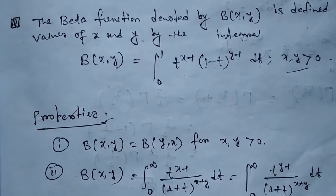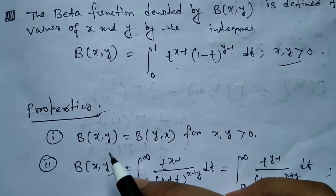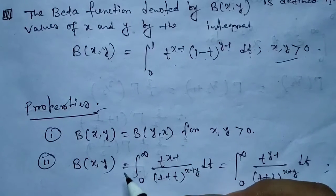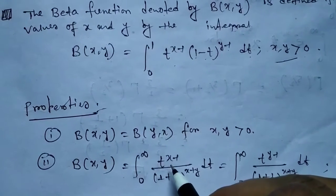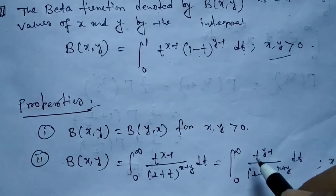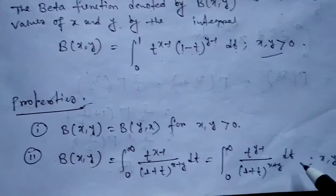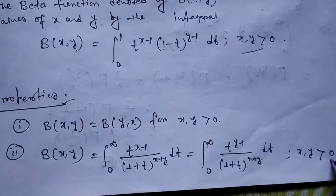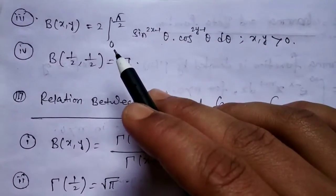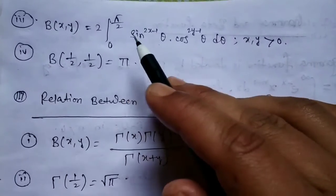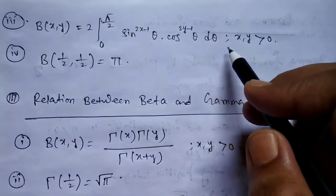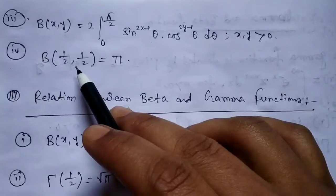Let us consider some important properties of the Beta function. Property 1: β(x, y) = β(y, x), for x, y greater than 0. Property 2: β(x, y) = integration from 0 to infinity of t^(x−1) / (1+t)^(x+y) dt, for x, y greater than 0. Property 3: β(x, y) = 2 · integration from 0 to π/2 of sin^(2x−1)(θ) · cos^(2y−1)(θ) dθ, for x, y greater than 0.